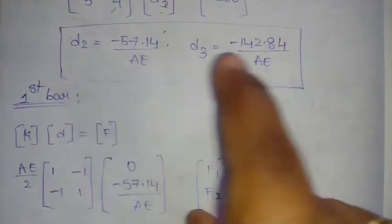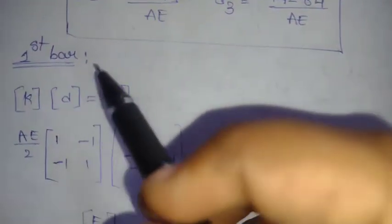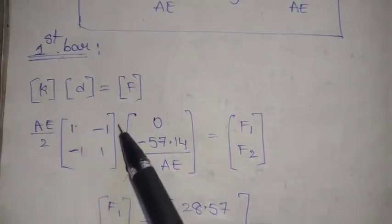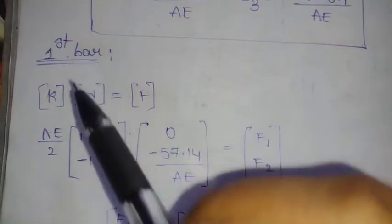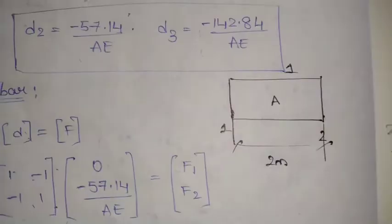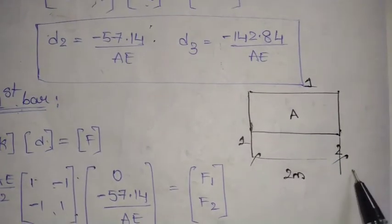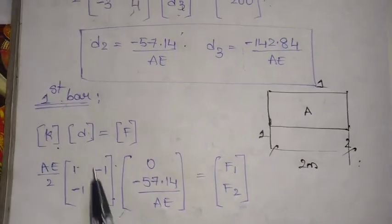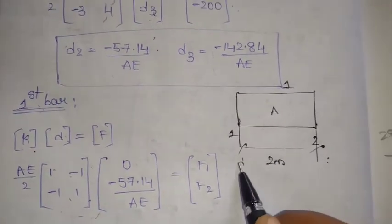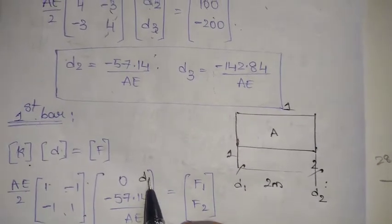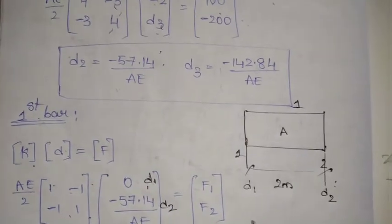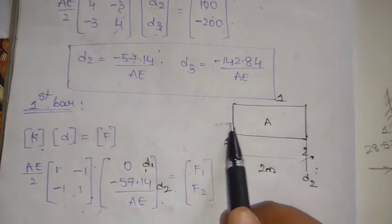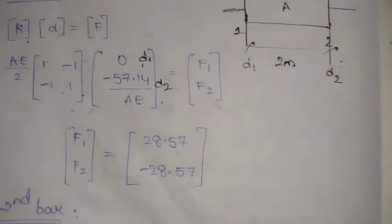Once we have D2 and D3, we move to the individual element level. For the first bar, we apply KD = F using the local stiffness matrix (AE/L)[1, -1; -1, 1]. The displacement vector for bar 1 is [D1, D2], where D1 = 0 due to the fixed condition and D2 is the value just obtained. Solving this gives us the nodal forces F1 and F2 for the first bar.